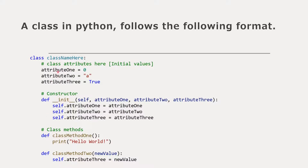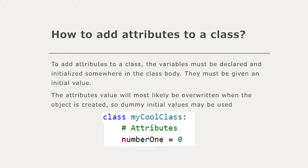The class definition is just this single line: class, the name you want for the class, colon, and then everything else is indented. To add attributes to a class, all you have to do is declare and initialize variables somewhere in the class body. Any variables declared within the class body will be considered an attribute. They must be given some initial value to function properly. The attribute's value will most likely be overwritten when the object is created, so a dummy initial value may be used — a zero, a one, a true, a false, or a null — since you'll likely be overwriting these values when you call the constructor.